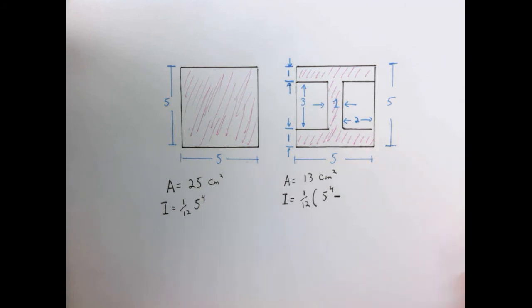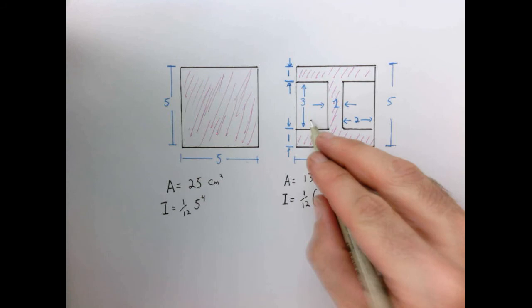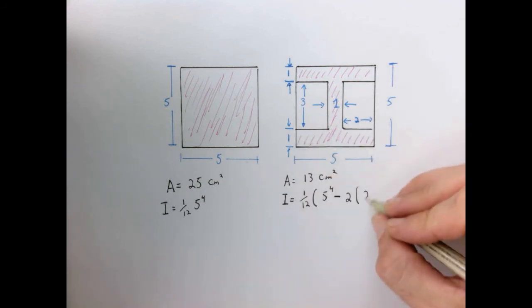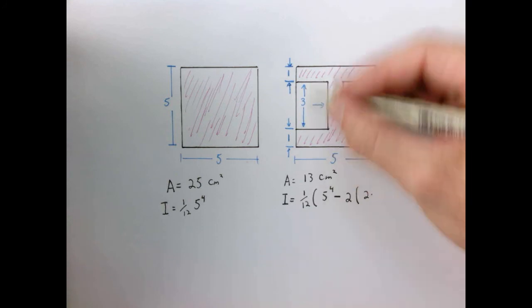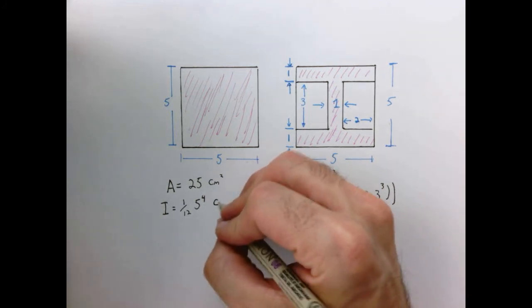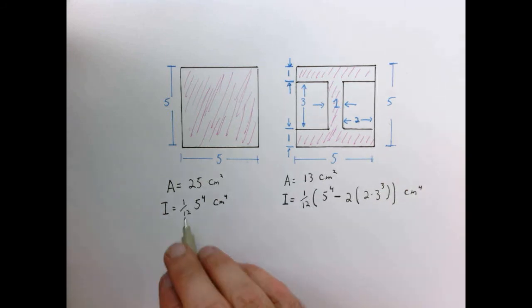But now we're going to subtract two times, because I have this one and this one, b, which is two units, h cubed, which is three, so three cubed. And the moment of inertia also has units, and it's centimeters to the fourth power, centimeters to the fourth power. So let's see what these numbers are. So here, five to the fourth power is one-twelfth, 625.